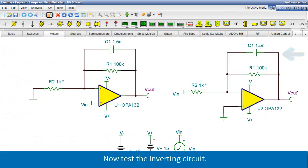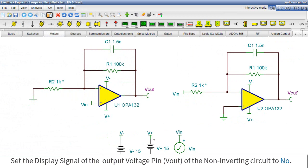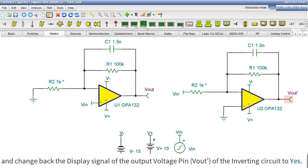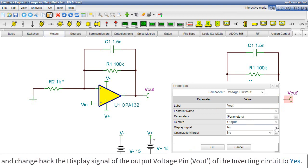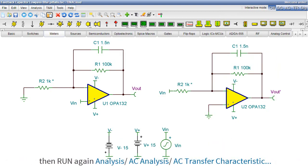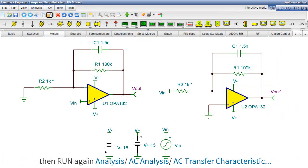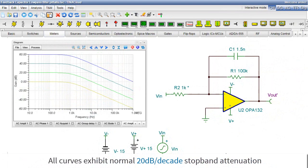Now test the inverting circuit. Set the display signal of the output voltage pin, Vout, of the non-inverting circuit to No. And change back the display signal of the output voltage pin of the inverting circuit to Yes. Then run again Analysis, AC Analysis, AC Transfer Characteristic. All curves exhibit normal 20 dB per decade stop band attenuation.